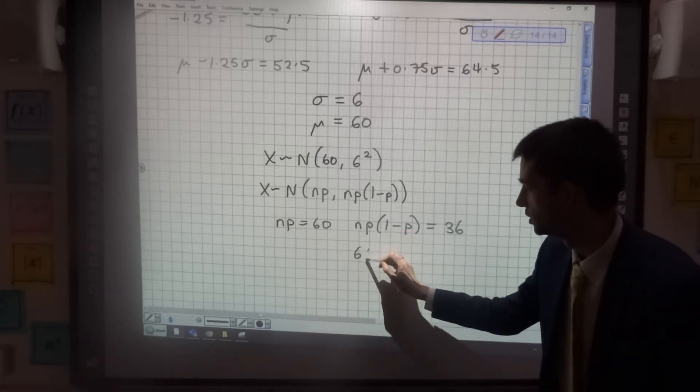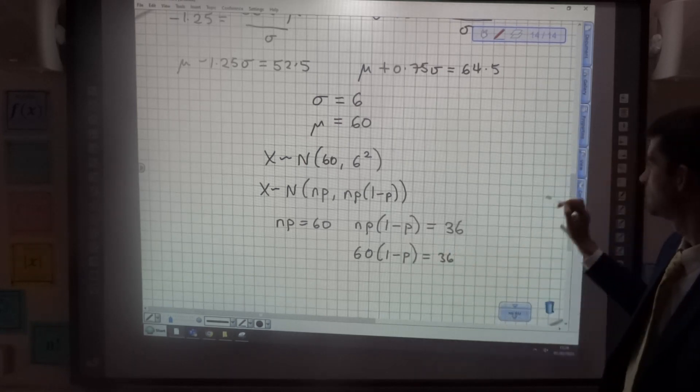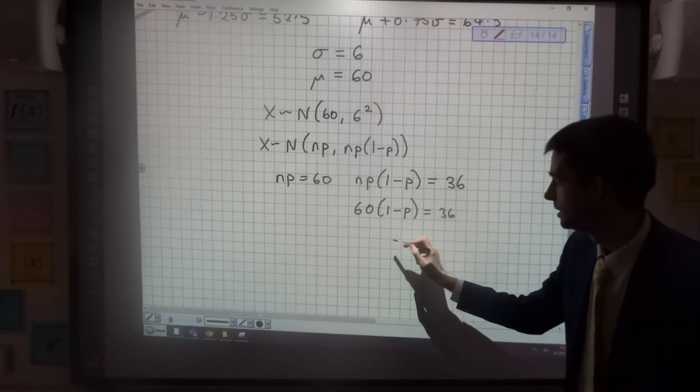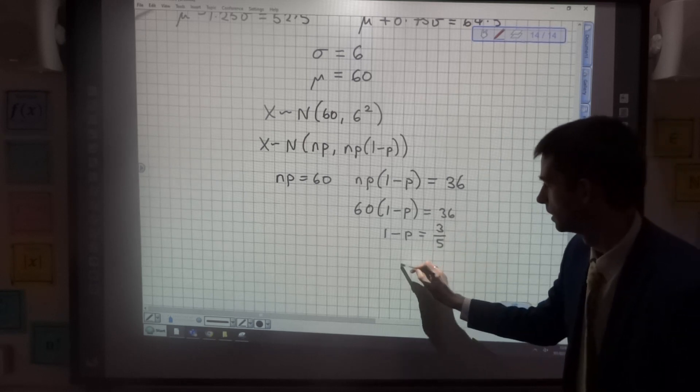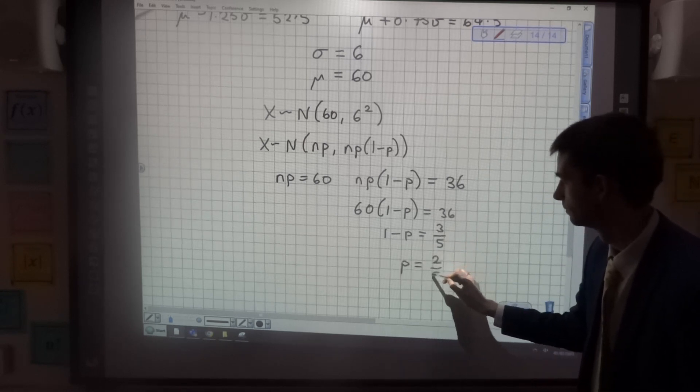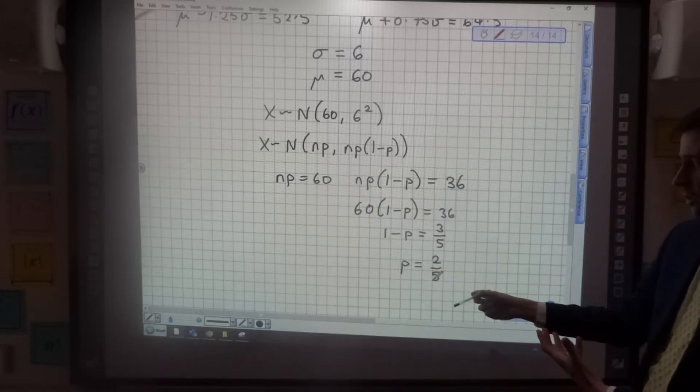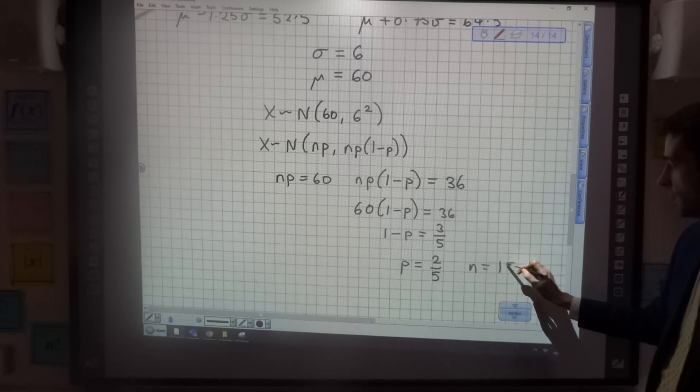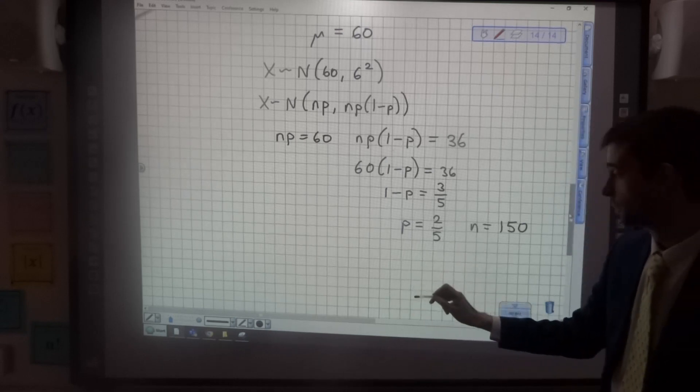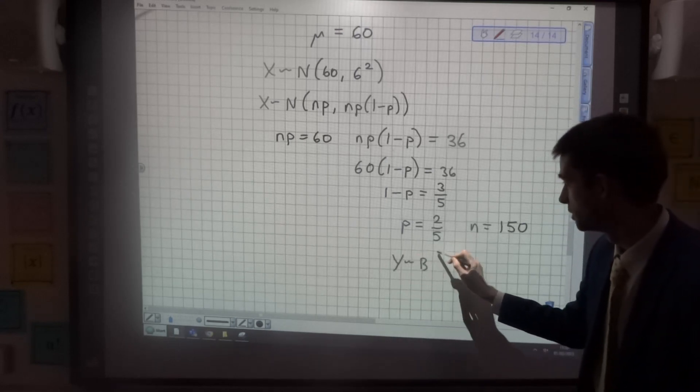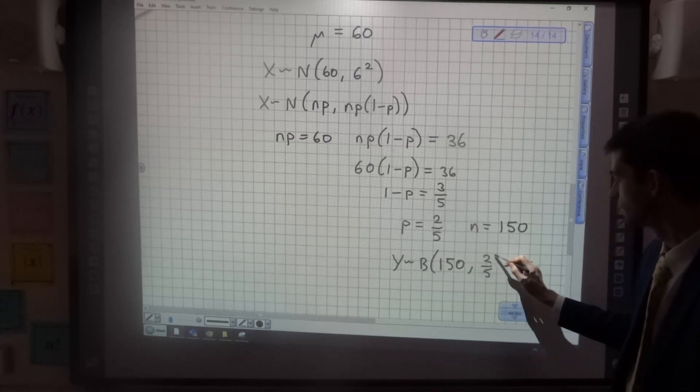Now if I replace np in this second equation with 60, I get 60 lots of (1 minus p) is 36. I can then divide by 60, I get 1 minus p is 3 fifths, which means that p is 2 fifths. And if I then go back to np is 60, if p is 2 fifths, that means that n is 150. Which means that our original binomial distribution, Y, follows a binomial distribution of 150, 2 fifths.